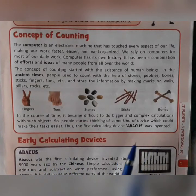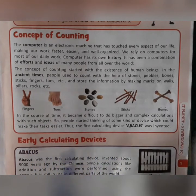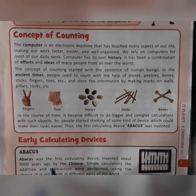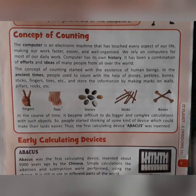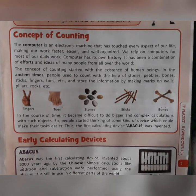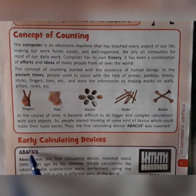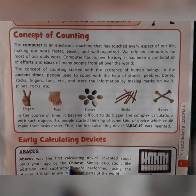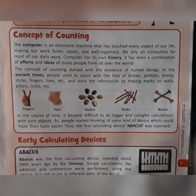Abacus is one of the early calculating devices, invented about 5000 years ago by the Chinese. Simple calculations like addition and subtraction were performed using the Abacus. It is still in use in different parts of the world. This device was used to perform simpler calculations like addition and subtraction, and even today it is also used in different parts of the world.